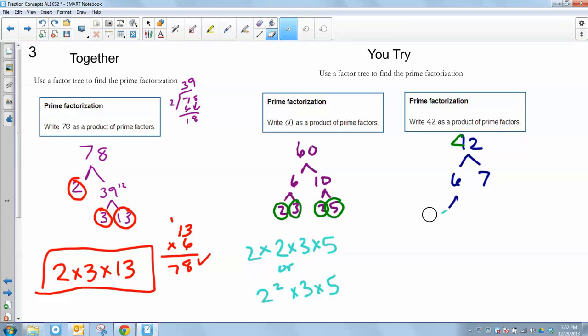6 can be broken apart into 2 and 3, which are both prime numbers. 7 is already a prime number, so we'll circle that bad boy. So my final prime factorization should be 2 times 3 times 7. And that is our answer to our prime factorization for 42.